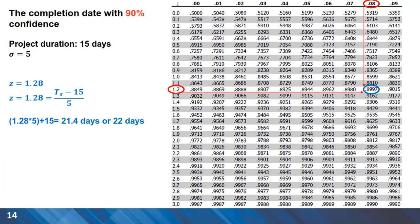Another benefit of the z-score table is to calculate durations associated with a certain probability. In this case, we want to understand what duration we are 90% confident we can finish by. The CPM completion time is 15 days with a standard deviation of 5. We use the z-score formula to calculate the duration for the project, and this is 22 days. We can find this from the formula and the table, and we are 90% sure the project is finished by that time.